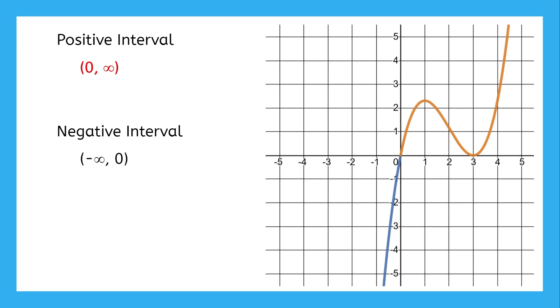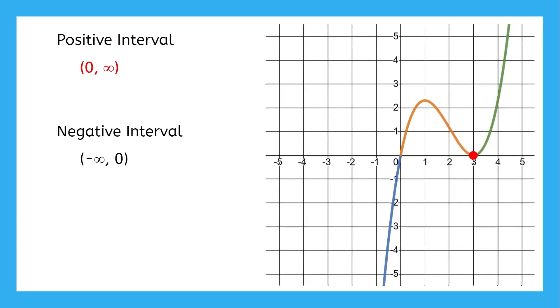Remember what we said before, if the output is zero, we can't include it in a positive or negative interval. So we need to remove three from our positive interval by splitting it into two separate ones. The first interval is from zero to three, then the second interval is from three to infinity.